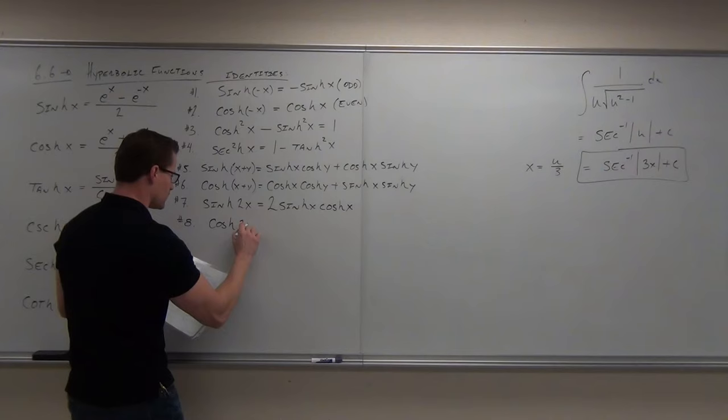One more. The derivative of cotangent is negative cosecant squared. Same thing happens with hyperbolic cotangent: we get negative hyperbolic cosecant squared times du/dx by chain rule. So the integral of hyperbolic cosecant squared is negative hyperbolic cotangent.